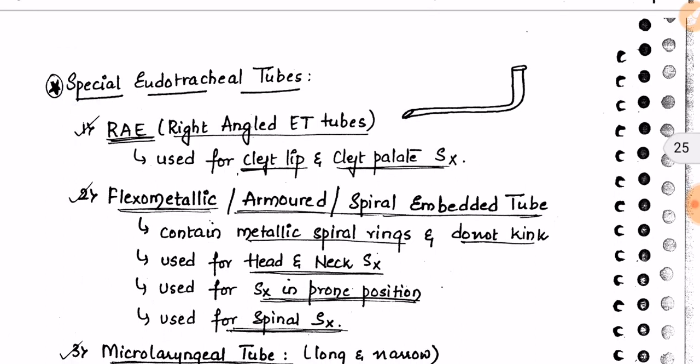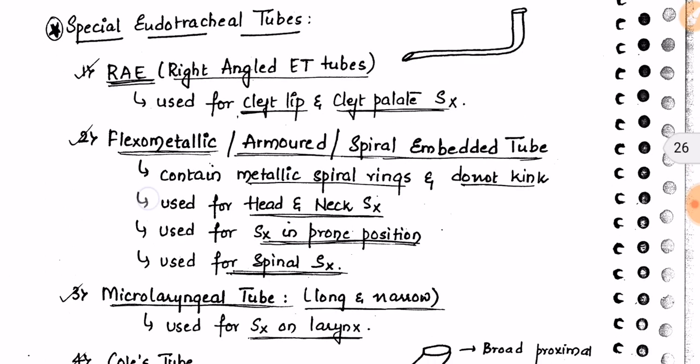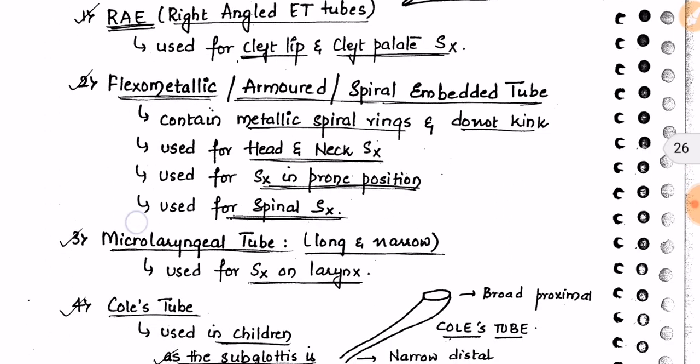Now for special endotracheal tubes. First, right-angled endotracheal tubes are used for cleft lip or cleft palate surgery, where a normal tube cannot be used. Second, the flexometallic armored spiral tube — also called the spiral embedded tube — contains metallic spiral rings that prevent kinking.